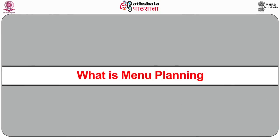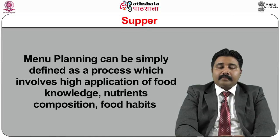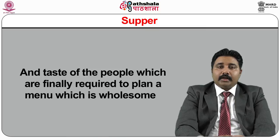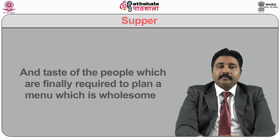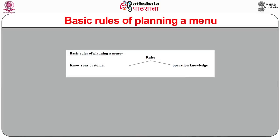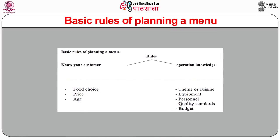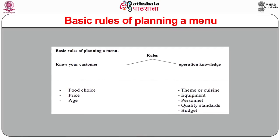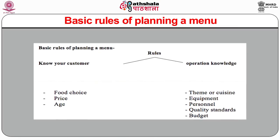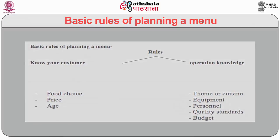Menu planning can be simply defined as a process which involves high application of food knowledge, nutrients, composition, food habits and taste of the people, required to plan a wholesome menu. The basic rules of planning a menu start with knowing your customer — including food choice, price, age, operation knowledge, theme or cuisine, equipment, personnel, quality standards and budget.